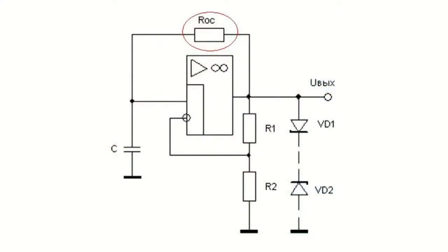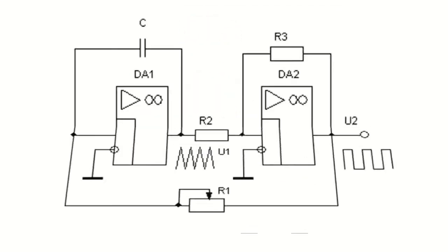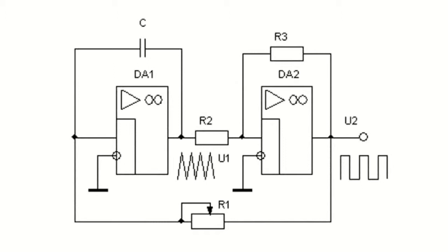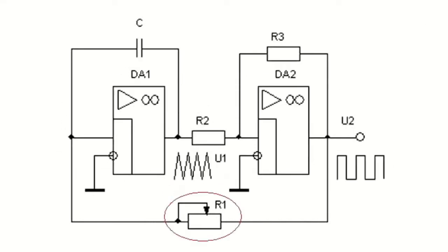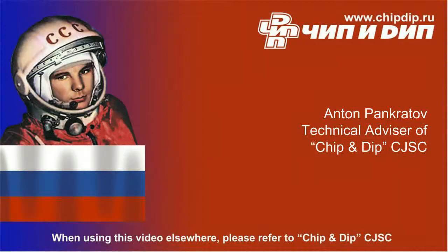Oscillation frequency can be changed by changing the resistance R_feedback. To obtain a sawtooth voltage with high linearity, the circuit shown in the figure can be used. With the help of resistor R1, you can change the frequency of generation in the range of more than 100 to 1. This generator can stably operate in the range of frequencies from 0.1 Hz to 100 Hz.